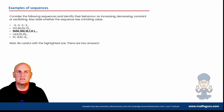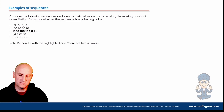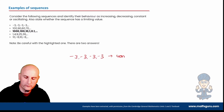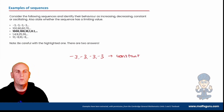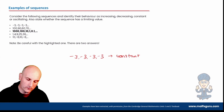Here are some examples of sequences. Consider the following sequences and identify their behavior as increasing, decreasing, constant, or oscillating. Also state whether the sequence has a limiting value. The first one: minus 3, minus 3, minus 3, minus 3— that is going to be a constant sequence. The next one: 100, 90, 80, 70 — we're taking away 10 each time, so in that situation it is going to be decreasing.